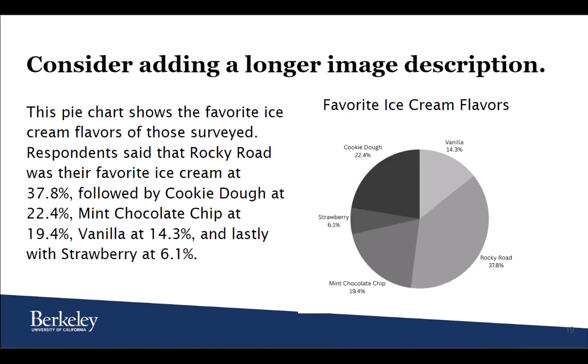But 150 characters might not be enough to describe your image. In this case, you can consider adding a longer image description to your content. This image description will need to be in plain text and can be as long as is needed to describe your image to your audience. In this example, we have information in our long description that would be too much to fit in our graphic's alt text, but works great as an accompanying piece to your information.